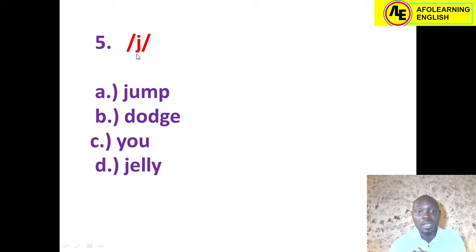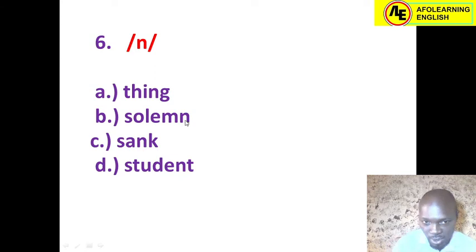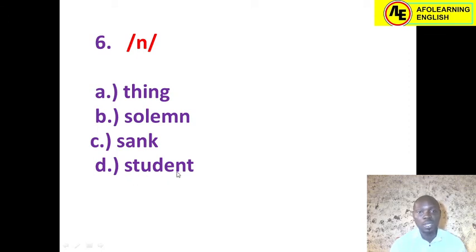Always pronounce the options before choosing your answer — speech sounds differ from letters. Number six: the symbol is /ŋ/. Option A is 'thin' — not the answer. Option B is 'solemn' — the letter N here is silent, so it's not the answer; pay attention to silent letters. Option C is 'sank' — whenever you see NK, the letter N changes to /ŋ/, which is not what we want here. Option D is 'student' — the correct answer, as it contains the /n/ sound.